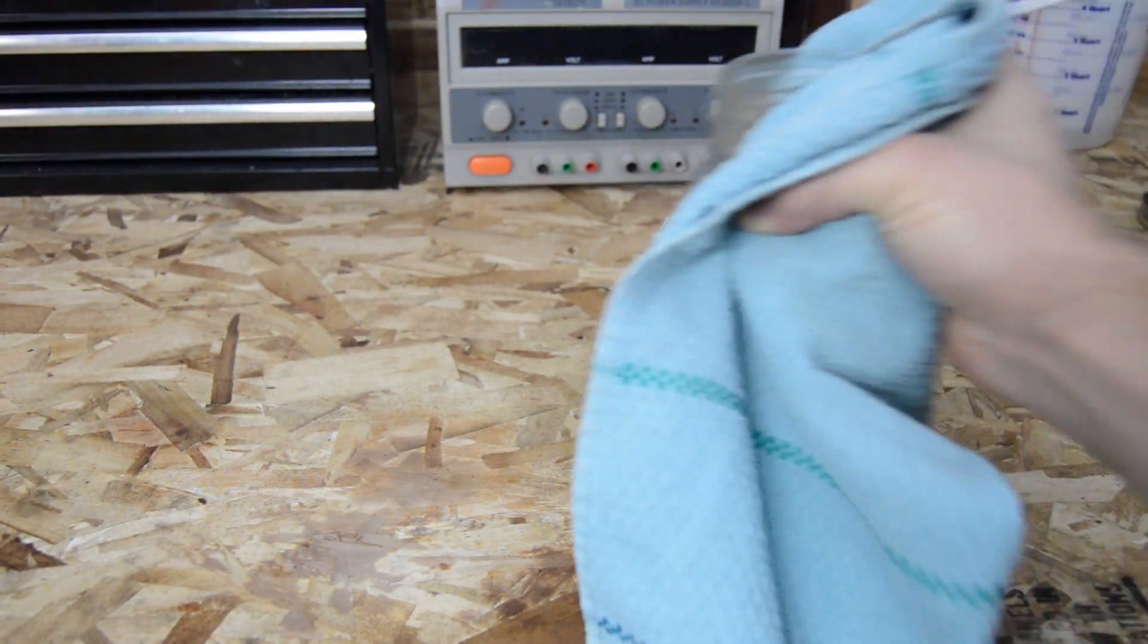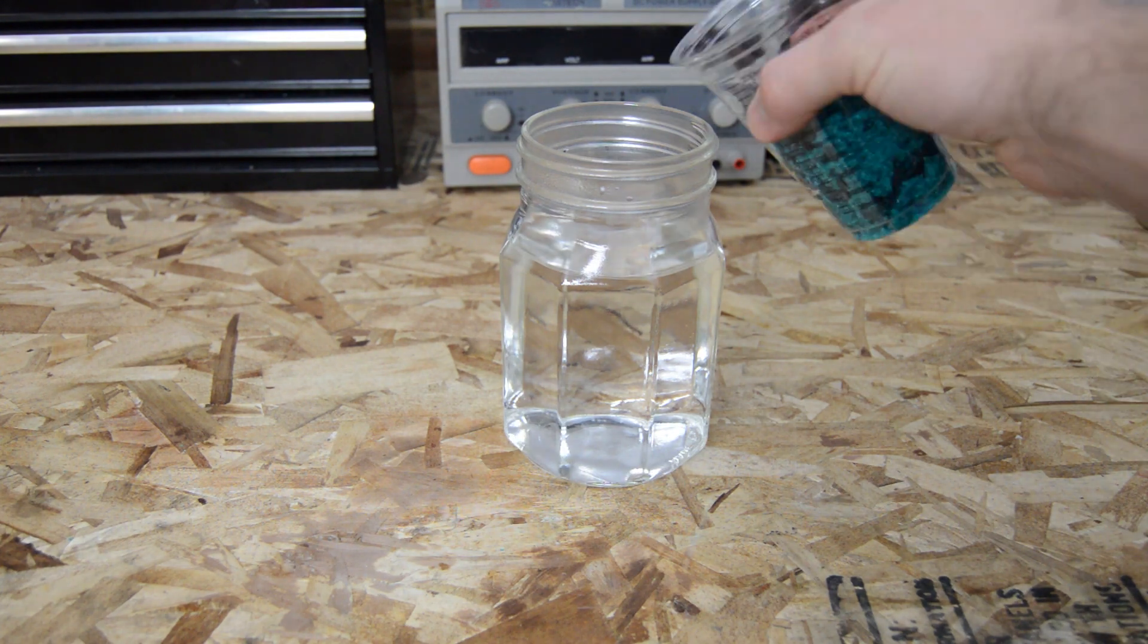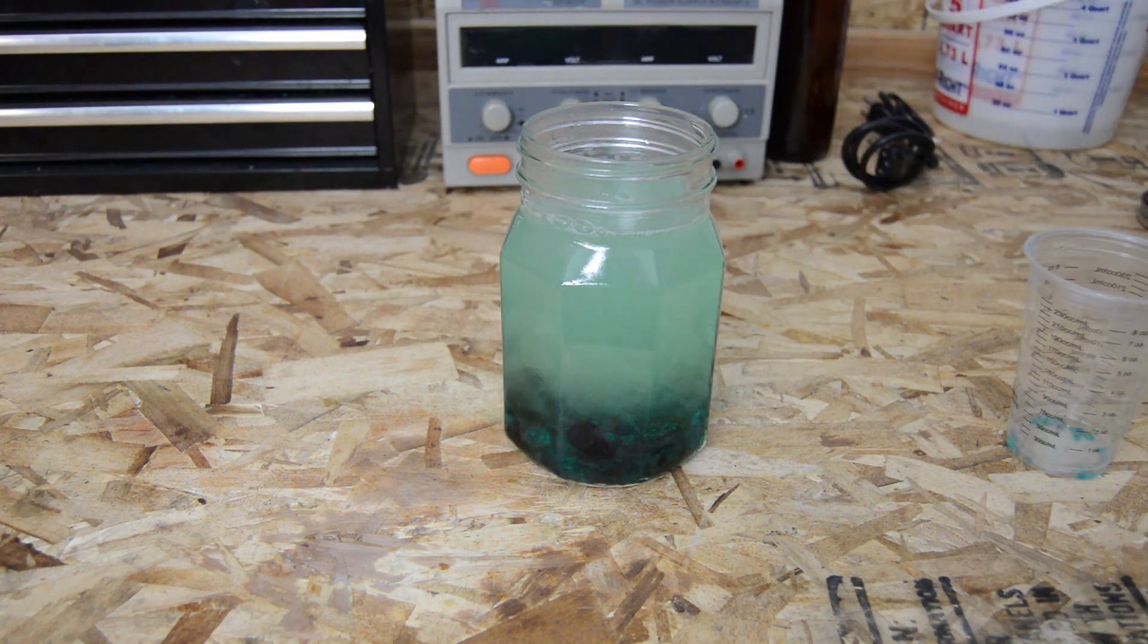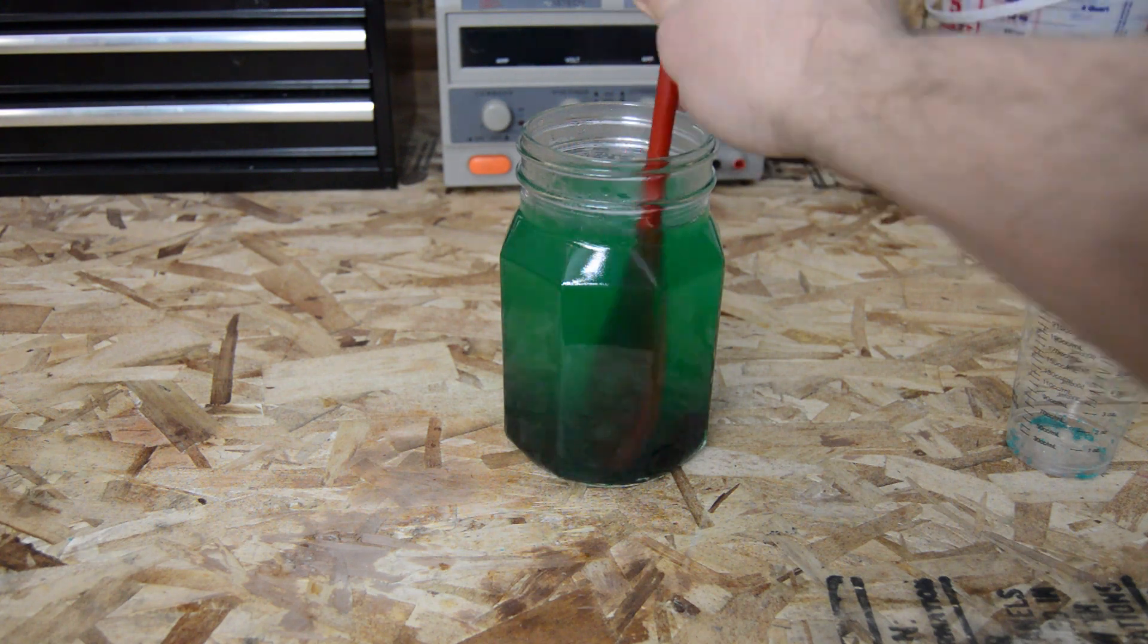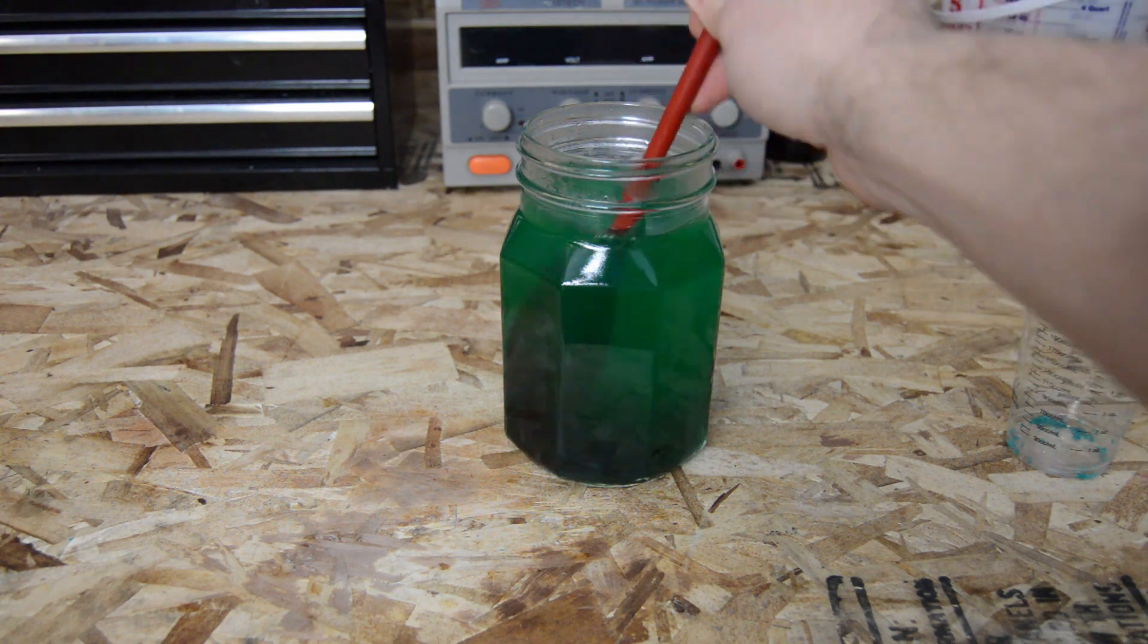Before adding the chemicals into your Mason jar, you're going to want to heat it in the microwave for about 4 minutes to get it nice and hot, which will help dissolve the nickel sulfate much quicker. First, add the nickel sulfate and stir until all the crystals have dissolved.